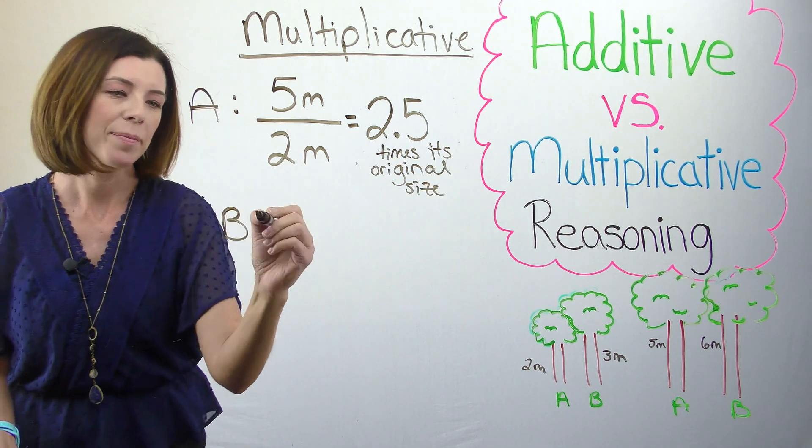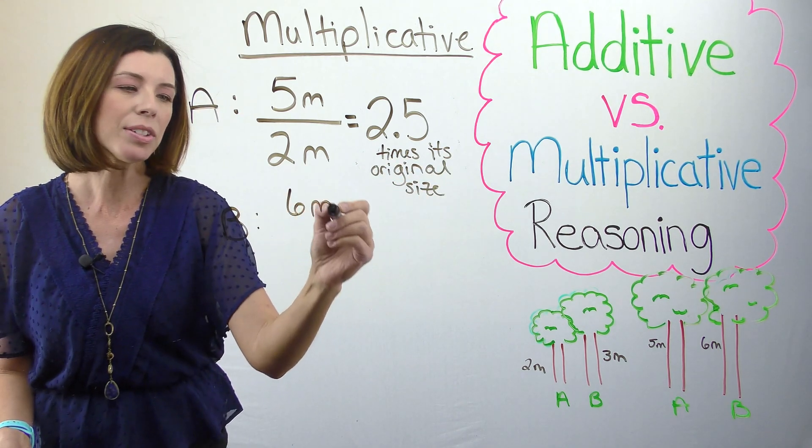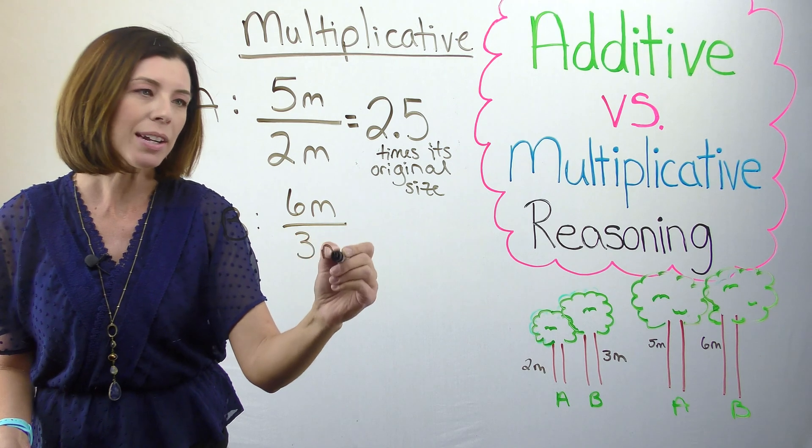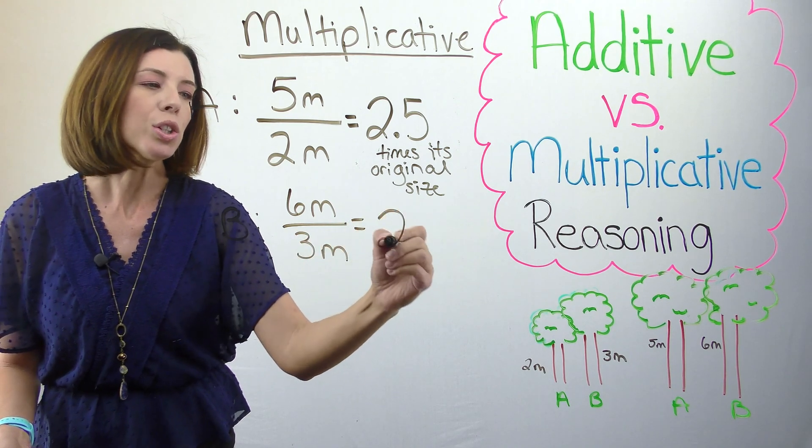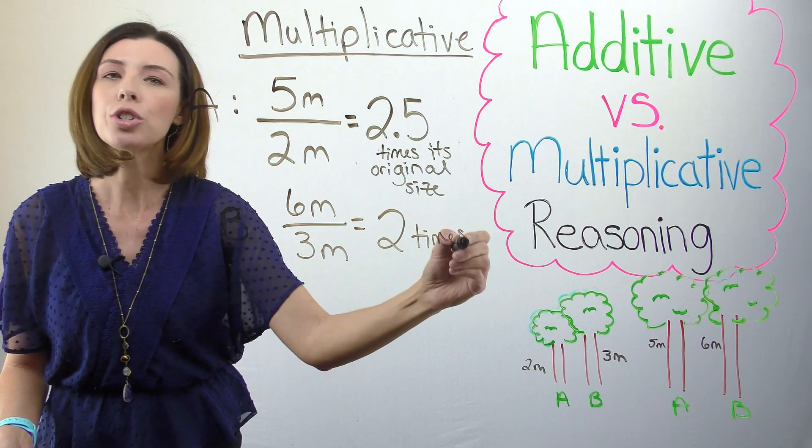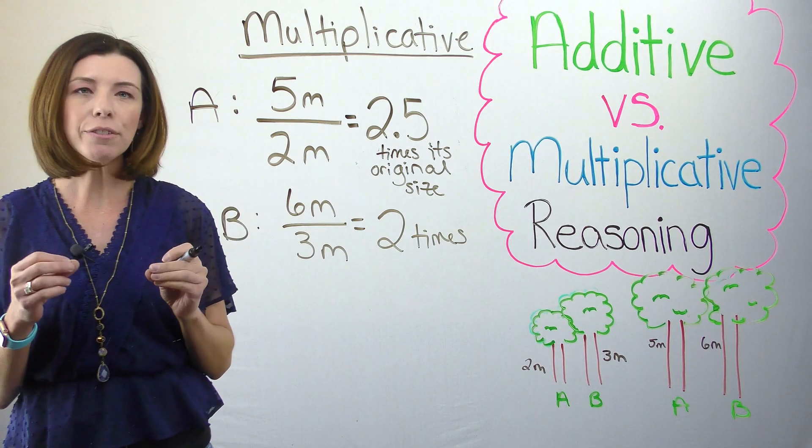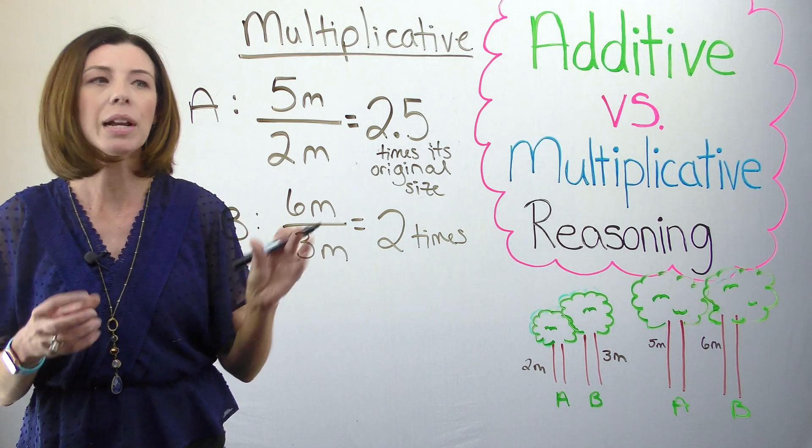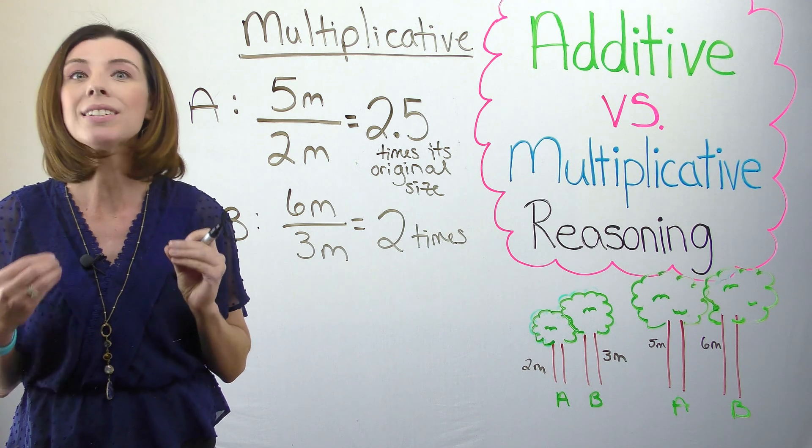With tree B, it ended at six meters, it started at three meters, and it's only two times its original size. This is the difference between additive versus multiplicative reasoning. Multiplicative reasoning, we're using division.